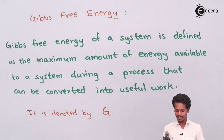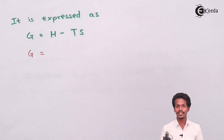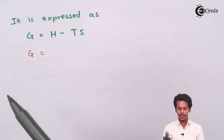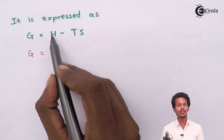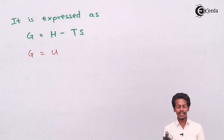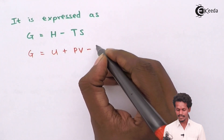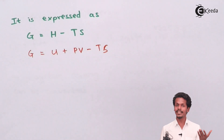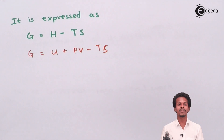Gibbs free energy is denoted by capital G, and mathematically it is expressed as G = H − TS, where G is Gibbs free energy, H is enthalpy, T is temperature, and S is entropy. Since enthalpy is the summation of internal energy plus pressure-volume work, we can also write this equation as G = U + PV − TS. So Gibbs free energy is dependent on internal energy, pressure-volume work, temperature, and entropy.